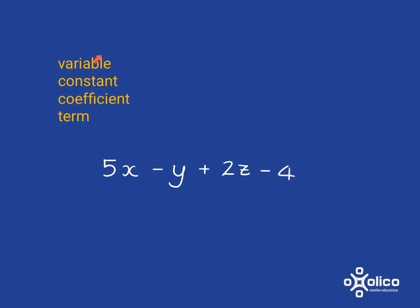Variable comes from the English word vary, and if we say something varies, it means it changes. So the variables in this expression are x, y, and z, because these are the things that can take on different values.